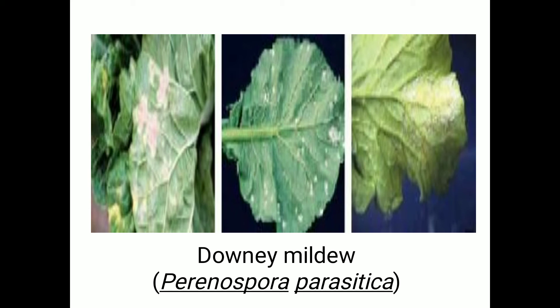The next disease is downy mildew of cruciferous crops, caused by the fungus Peronospora parasitica. Regarding symptoms, whitish pustules or fluffy white fungal growth appears on the lower surface of leaves, stem, and seed pods as purplish irregular areas. On the upper surface of leaves, yellow-colored spots or patches are observed — this is the typical symptom of downy mildew.